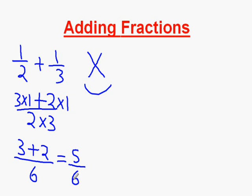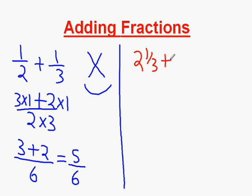Now we will be moving on to mixed numbers. We will take 2 and one third plus 1 and one fifth. First we have to change the numbers into improper fractions. It's 2 times 3 plus 1 over 3, which is 7 over 3.